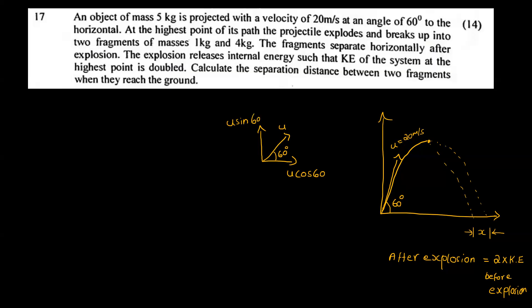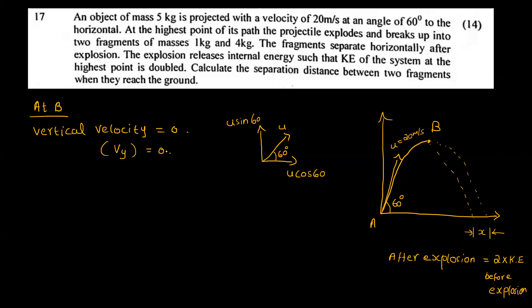At point B, which is the highest point, the vertical velocity is equal to zero. So at the highest point, V_y equals 0. Only the horizontal velocity remains.